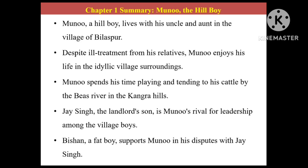Now we will transit to chapter one. Here we see the protagonist Munnu, who is a hill boy and he is happy there. He is an orphan and therefore he is staying with his uncle and aunt. These two people are very cruel and insensitive. Even though they don't have a child, they don't love Munnu. It is very disgusting because when somebody is childless they tend to give more love to children, but that does not happen here. They are always running after money.